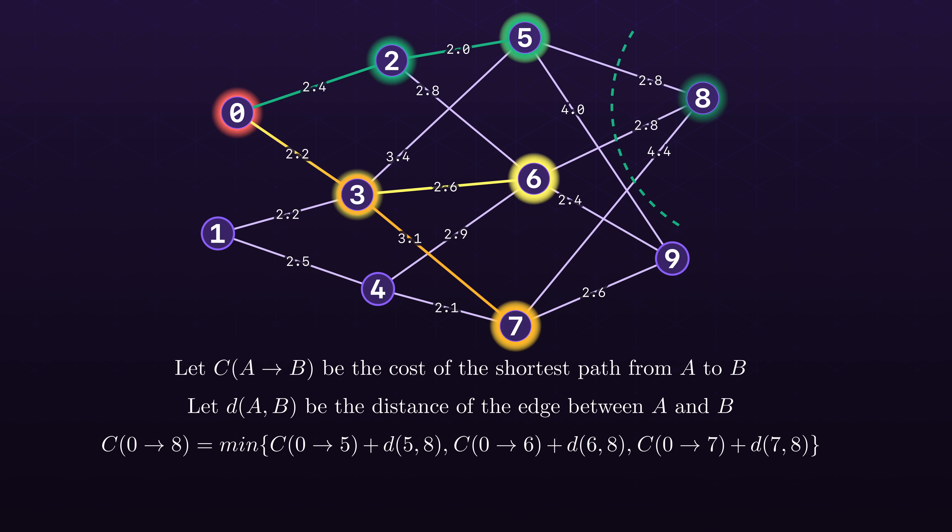The cost of an optimal path to some goal state can be broken down into separate parts. We first take the optimal path from the start to each adjacent node of the goal. Then we add the cost of traversing from that adjacent node to the final goal. And finally, the minimum of these costs is the optimal path.